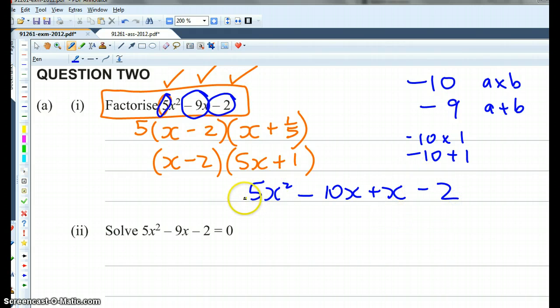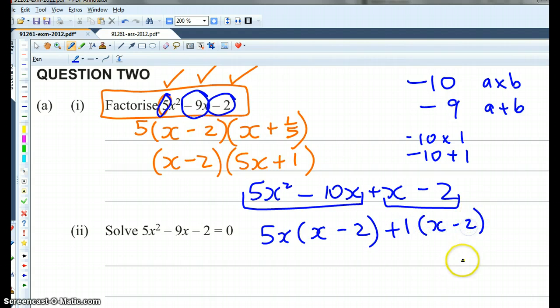Then we're going to factor these two. What's common to both? So it's 5x plus 1, times x minus 2, plus, factoring this, 1 times x minus 2. Then I can see that x minus 2 is common to both. So it's 5x plus 1, times x minus 2. So that's given the same result, different method.